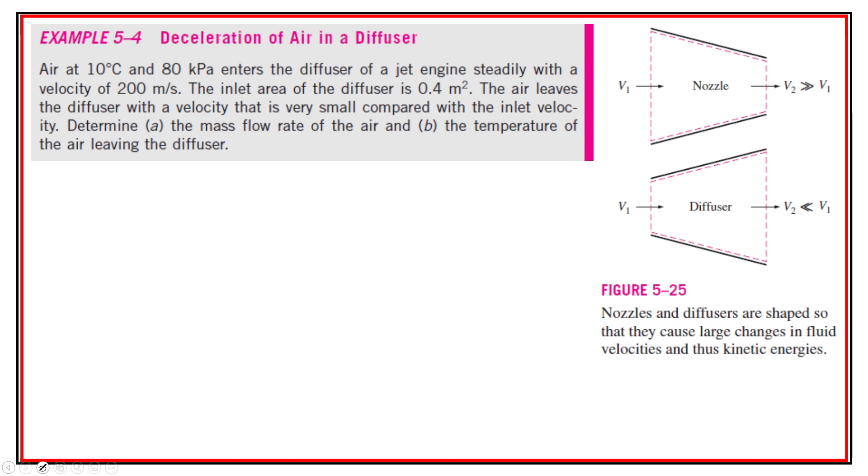Air at 10 degrees Celsius and 80 kilopascals enters the diffuser of a jet engine steadily with a velocity of 200 meters per second on the inlet. The inlet area of the diffuser is 0.4 square meters. The air leaves the diffuser with a velocity that is very small compared with the inlet velocity. Determine A, the mass flow rate of the air, and B, the temperature of the air leaving the diffuser.